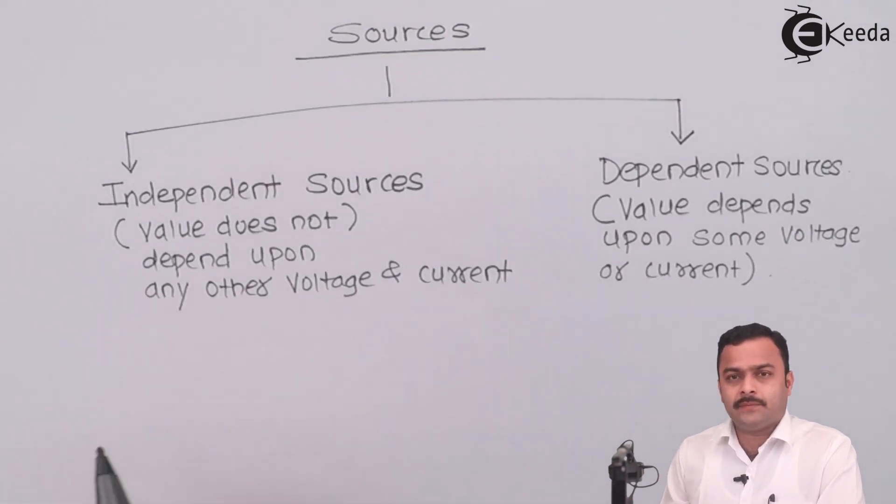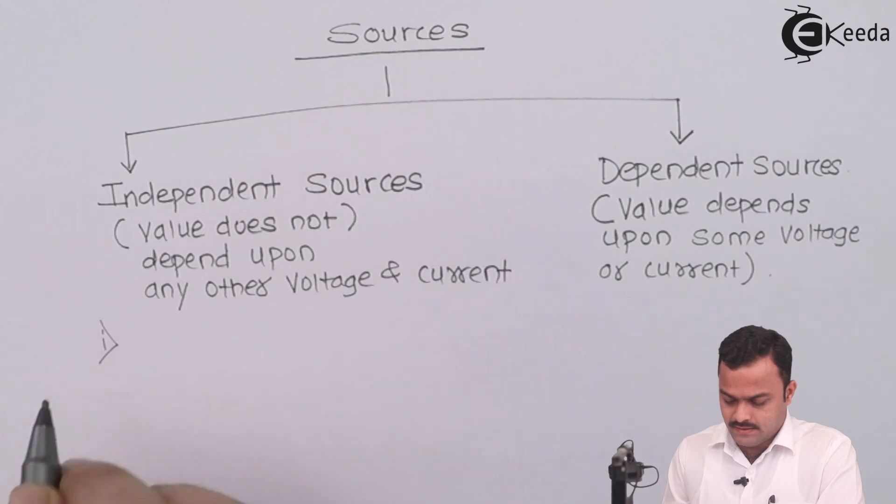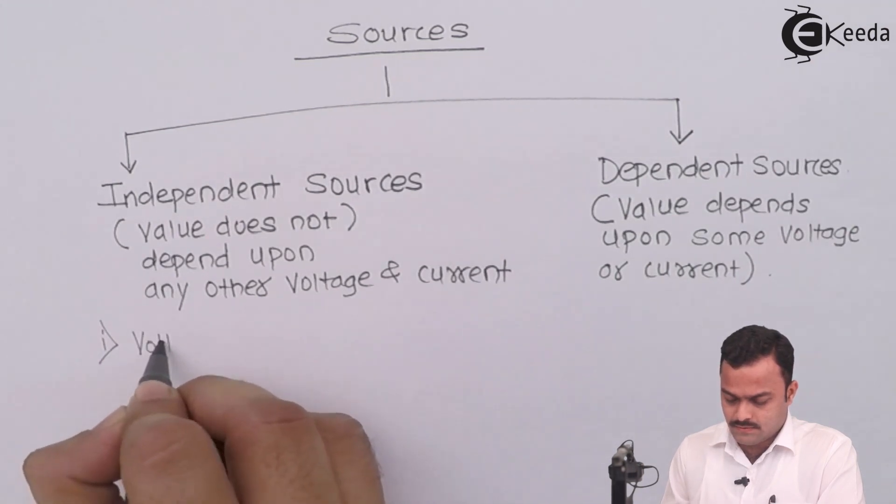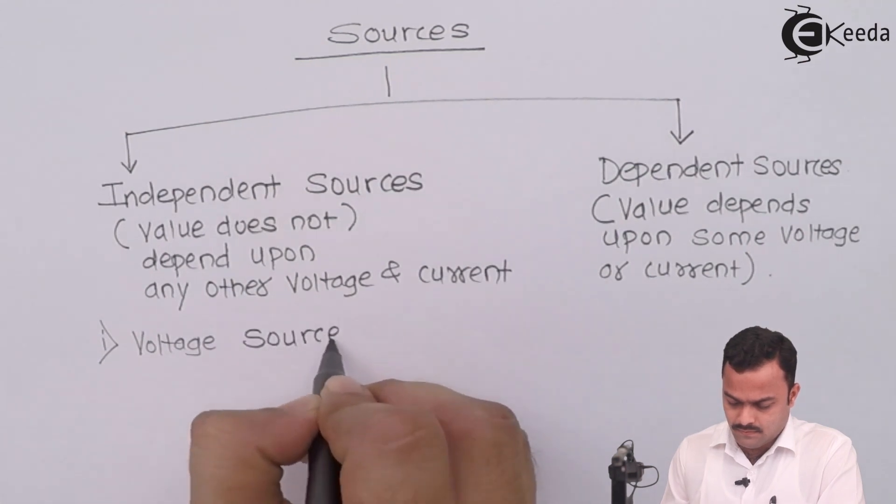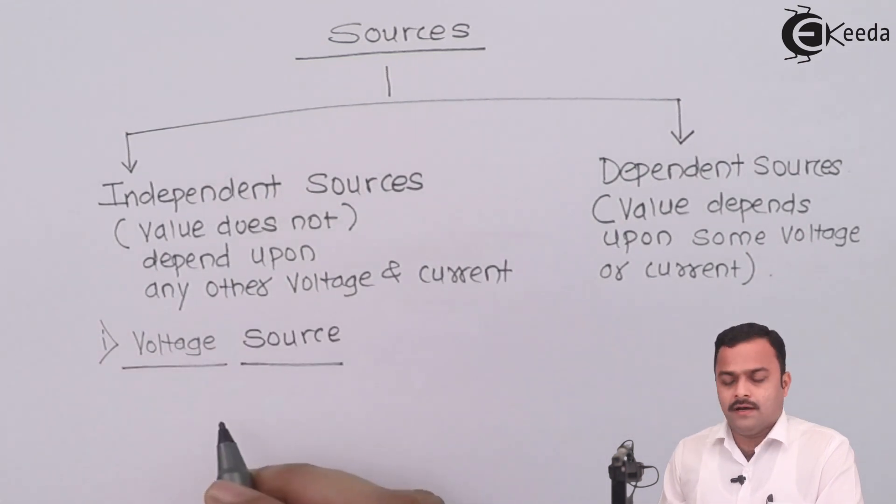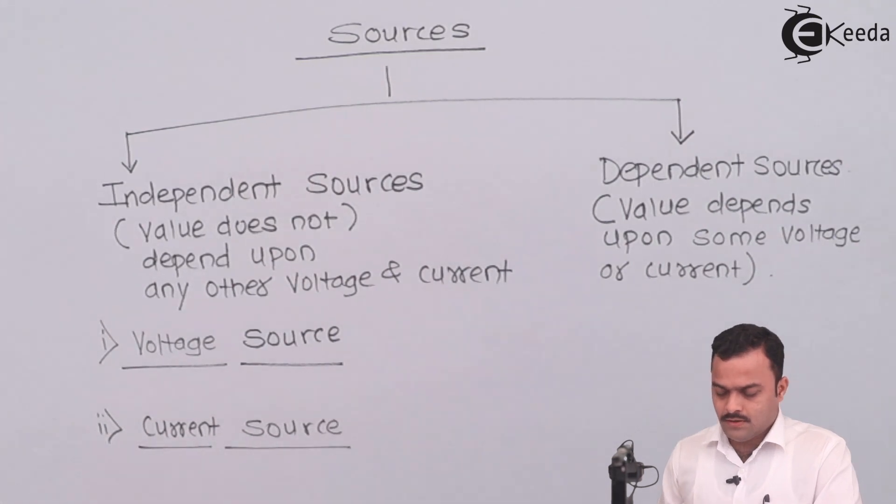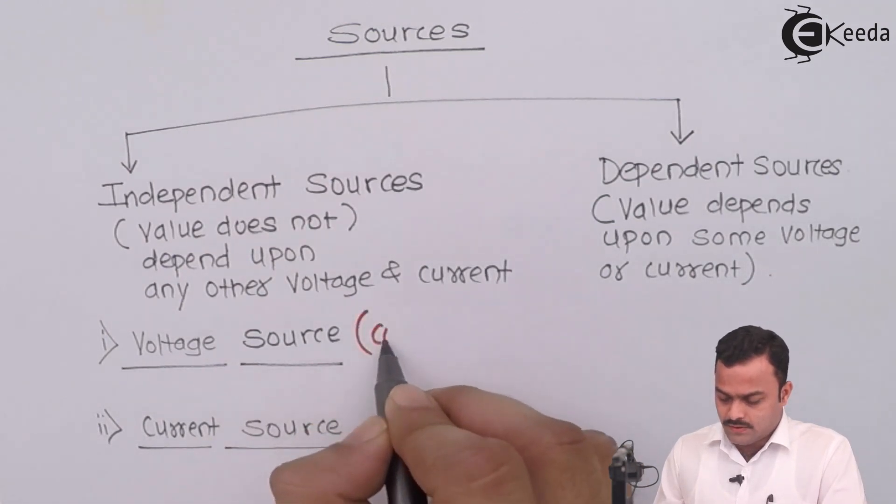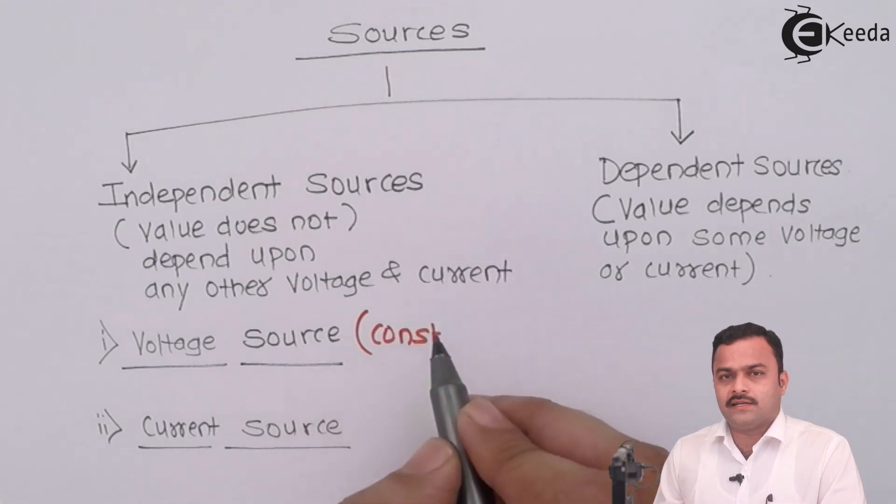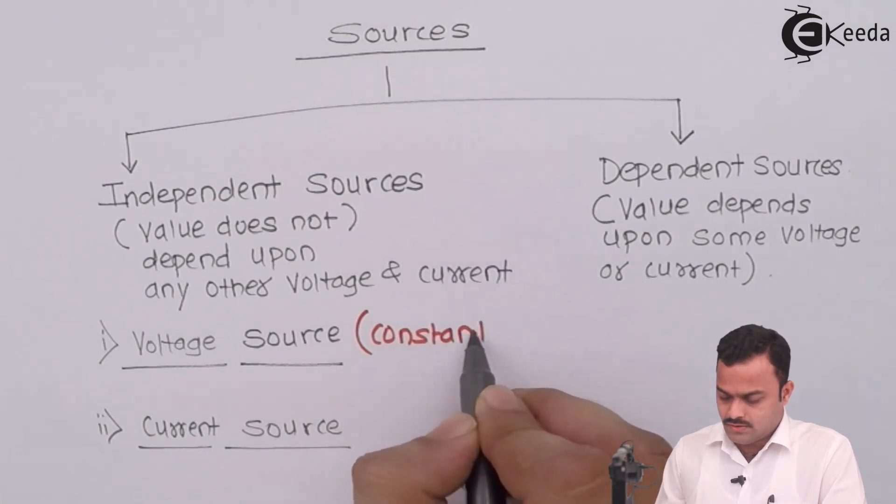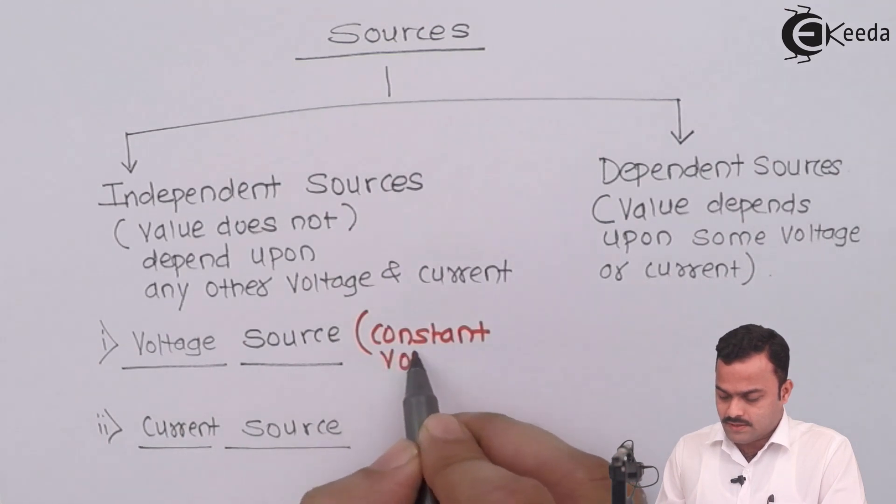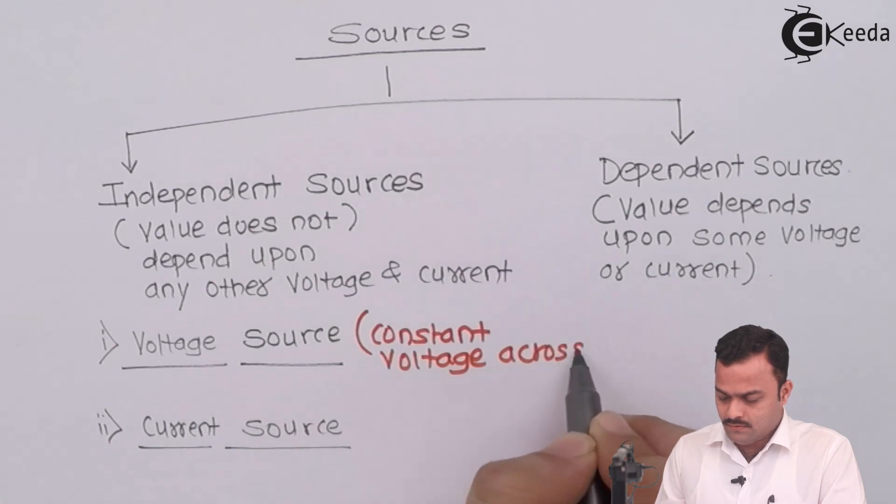There are two types of sources in independent source. One we can say voltage source. And second is current source. So what voltage source will do? It will provide a constant voltage irrespective of any amount of current taken from it. So it means maintain constant voltage across two terminals.